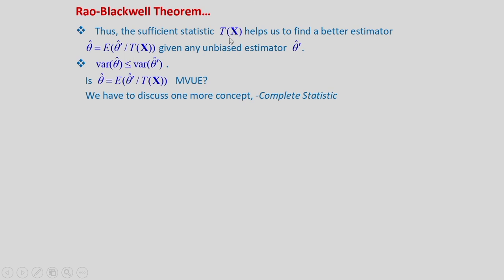Thus, the sufficient statistic T(X) helps us find a better estimator: theta_hat = E(theta_hat' | T(X)), with variance less than or equal to theta_hat'. But the question remains: is this theta_hat the minimum variance unbiased estimator? To answer this, we need to discuss the concept of complete statistic.